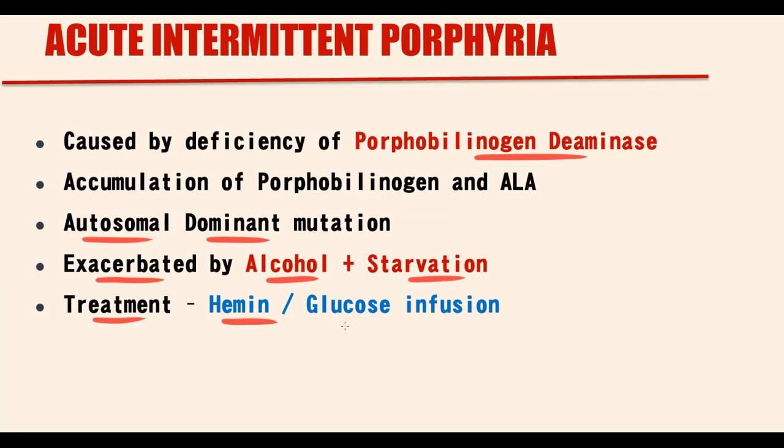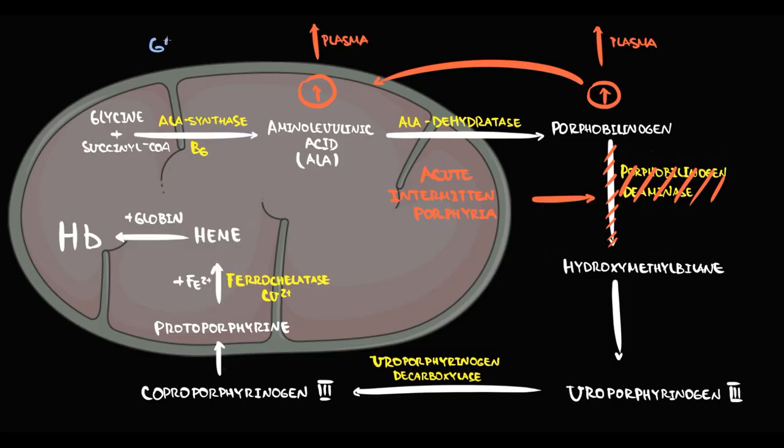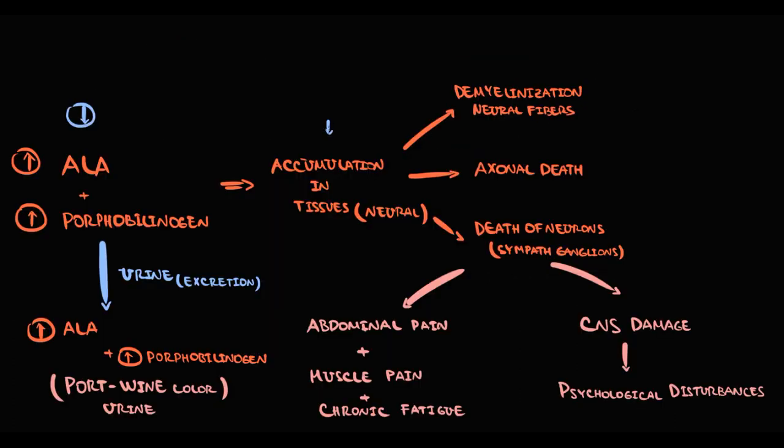Also we can use glucose. Because glucose, in opposite to starving, inhibits the function of ALA synthase. As a result, the production of ALA and porphobilinogen will decrease. With decreasing their blood concentration, polyneuropathy will be less severe, and thereby less severe will be the clinical symptoms.